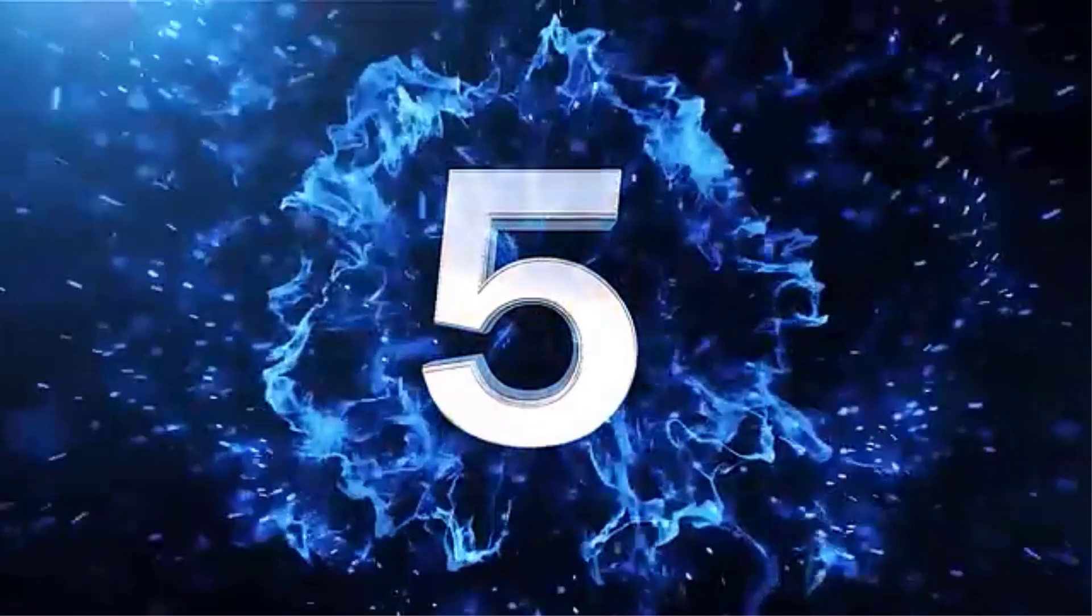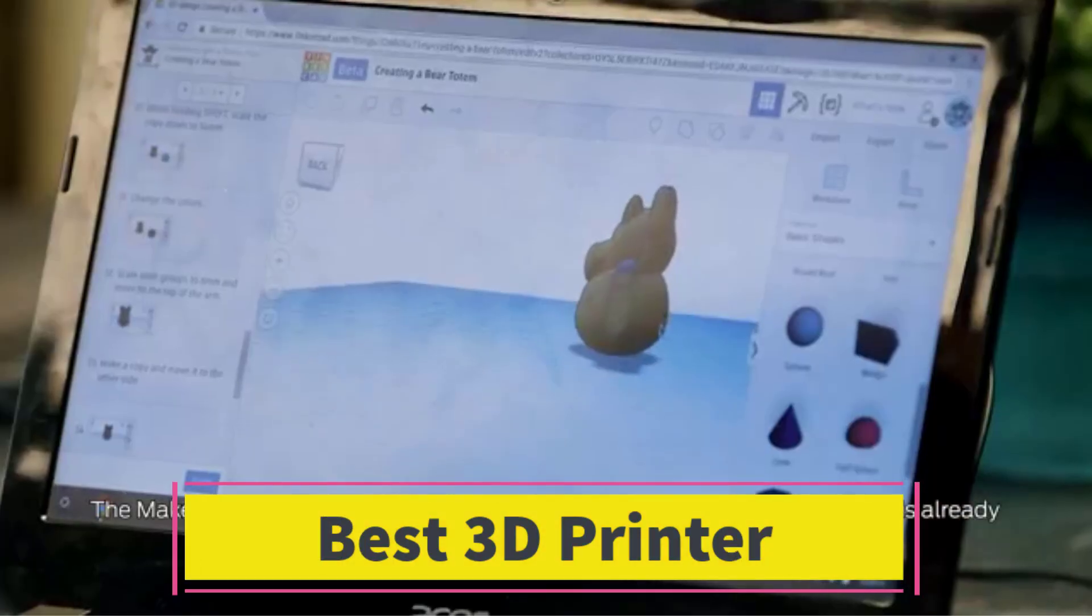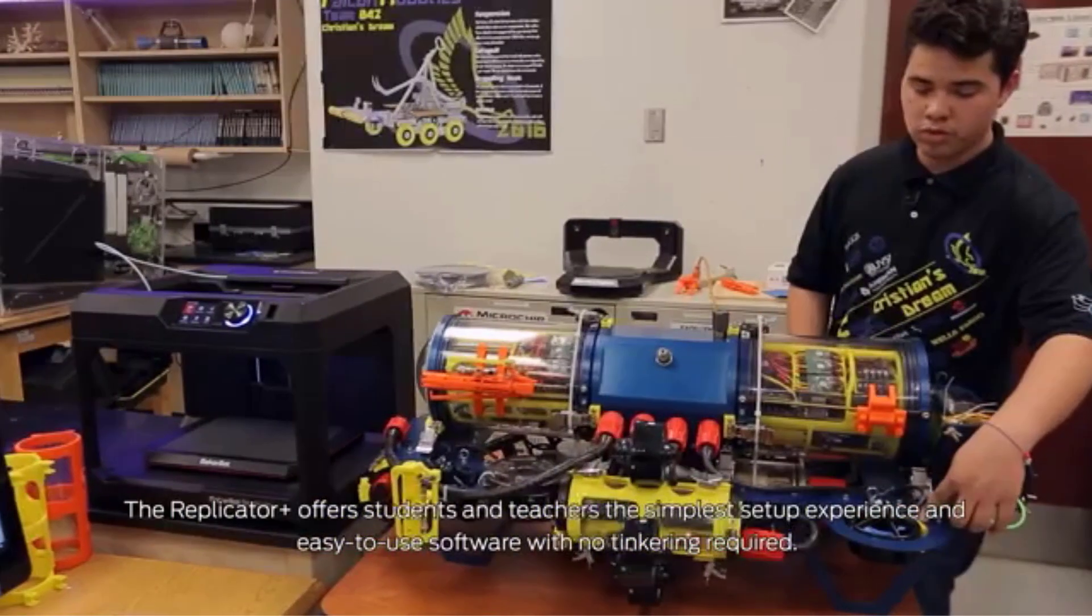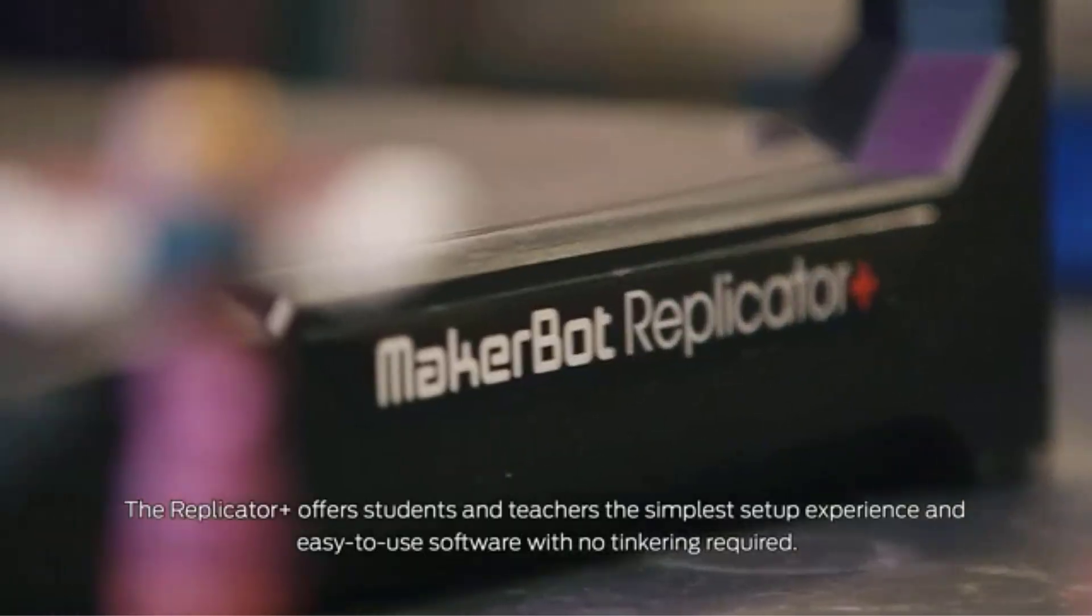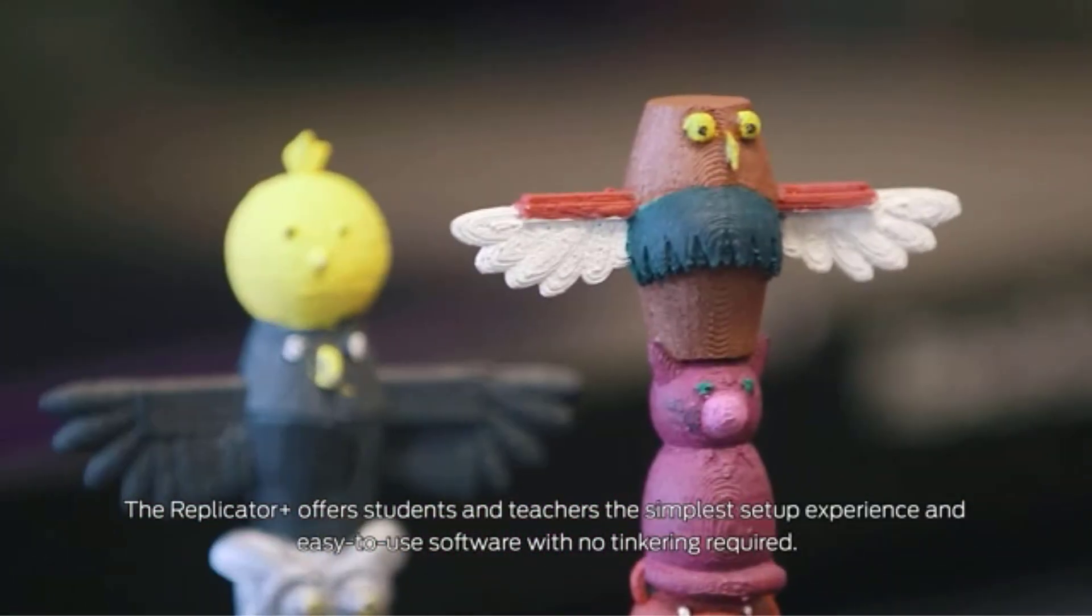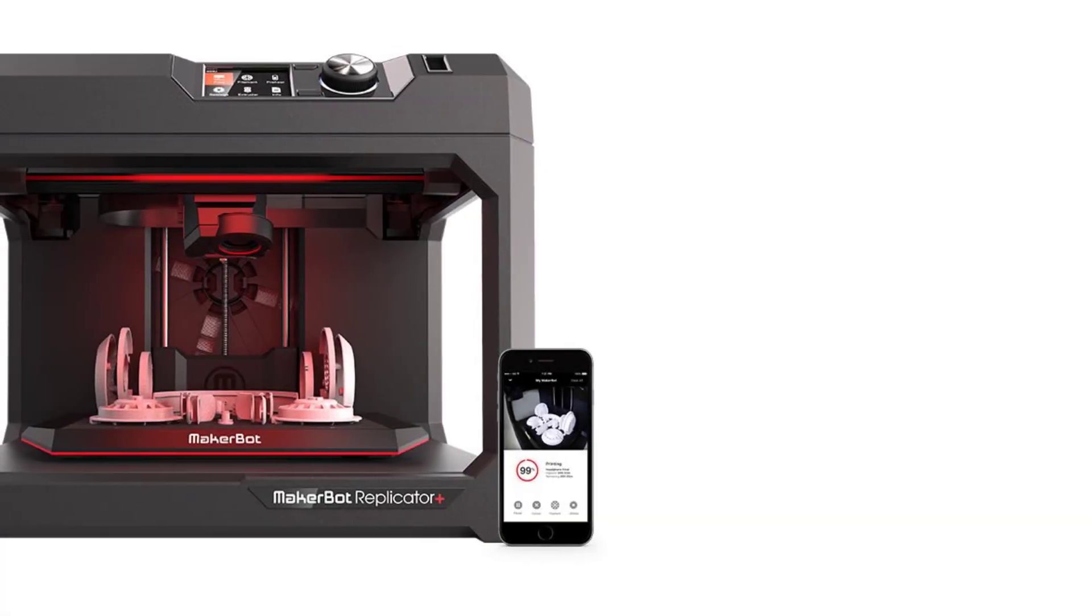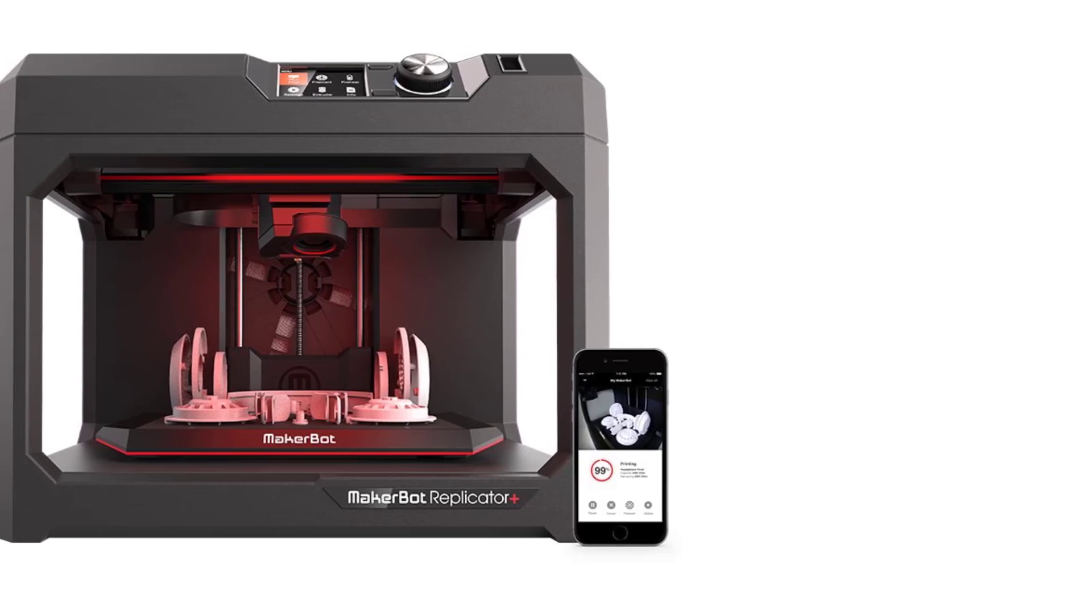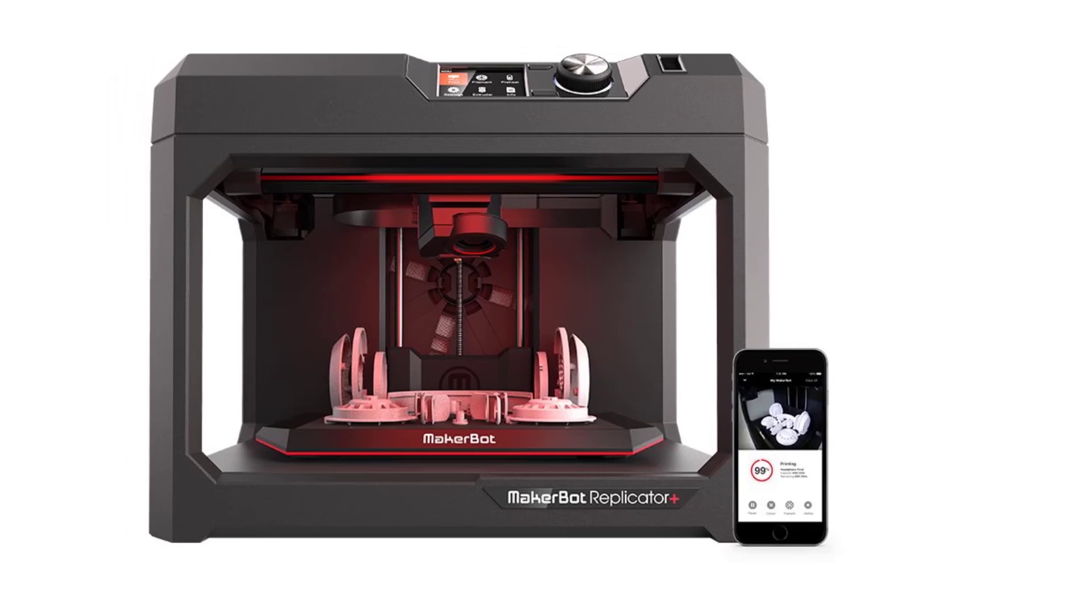Number 5: The MakerBot Replicator Plus Desktop 3D Printer Kit is designed for users looking to print high-quality models quickly and easily, making it ideal for both home and school environments. This printer is equipped with a swappable Smart Extruder Plus, which allows for hassle-free filament changes, ensuring smooth and efficient printing, especially with PLA material. The extruder is optimized for fast, reliable performance, providing high-quality prints with minimal effort.